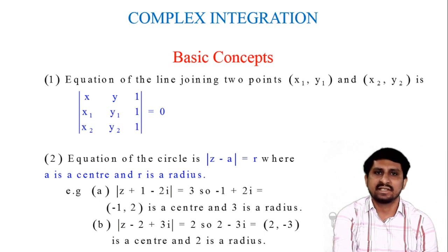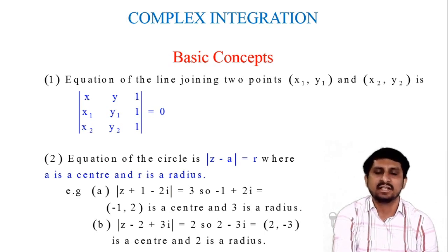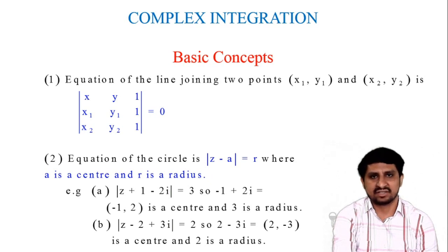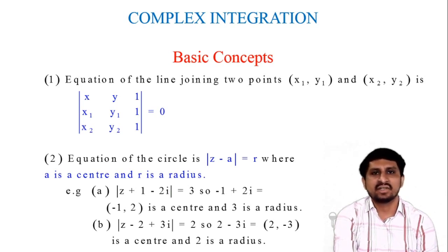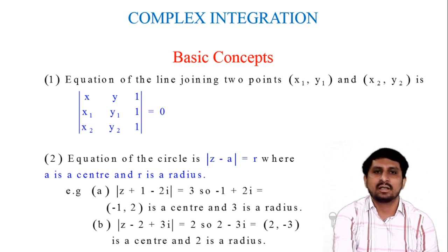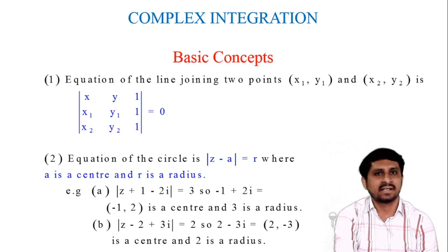First of all, you have to understand how you can find the equation of a line through two points x1, y1 and x2, y2. That is nothing but the determinant of x, y, 1 / x1, y1, 1 / x2, y2, 1 equal to 0. After that, the equation of circle — remember, this is also very important — is |z minus a| equal to r, where a is the center and r is the radius.